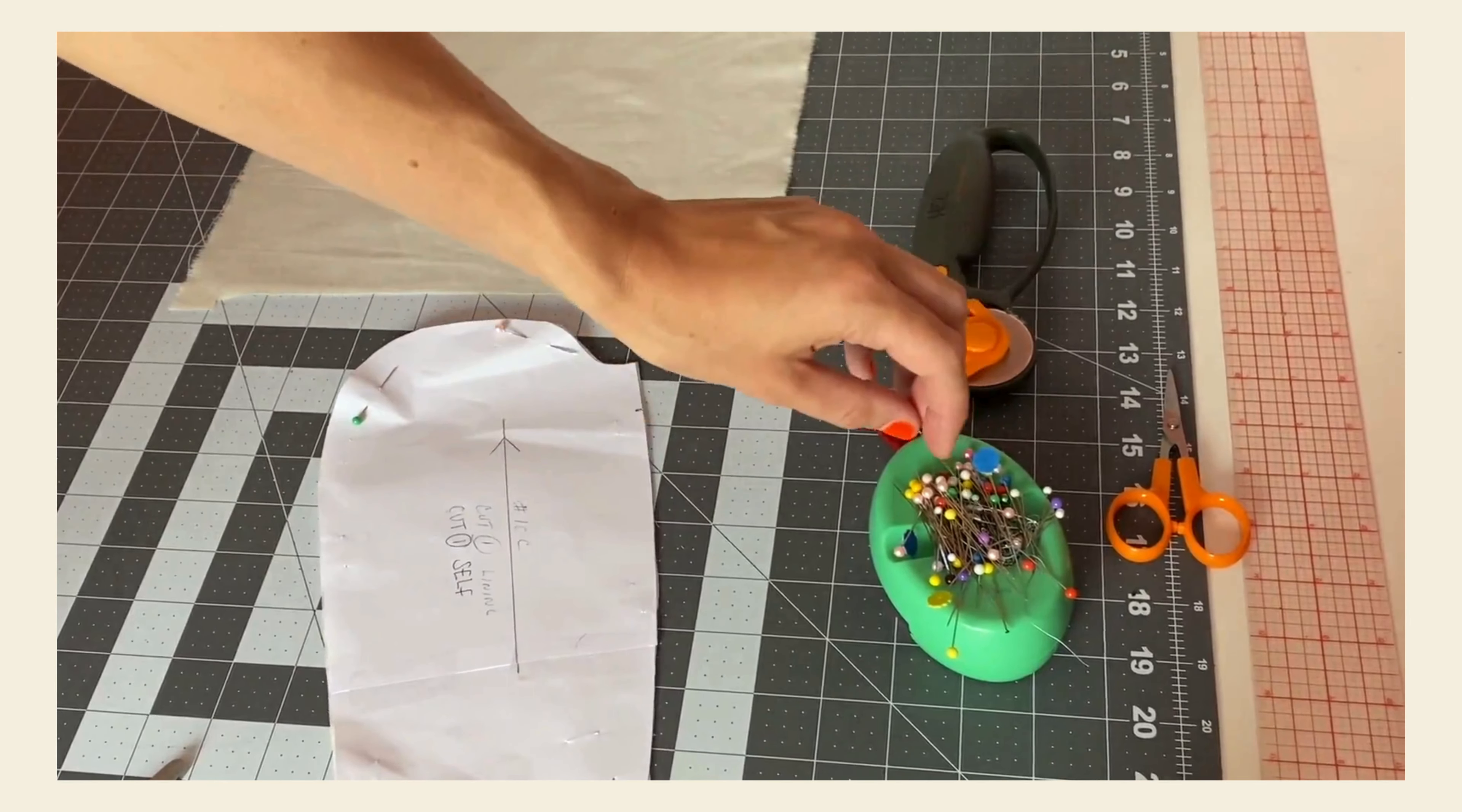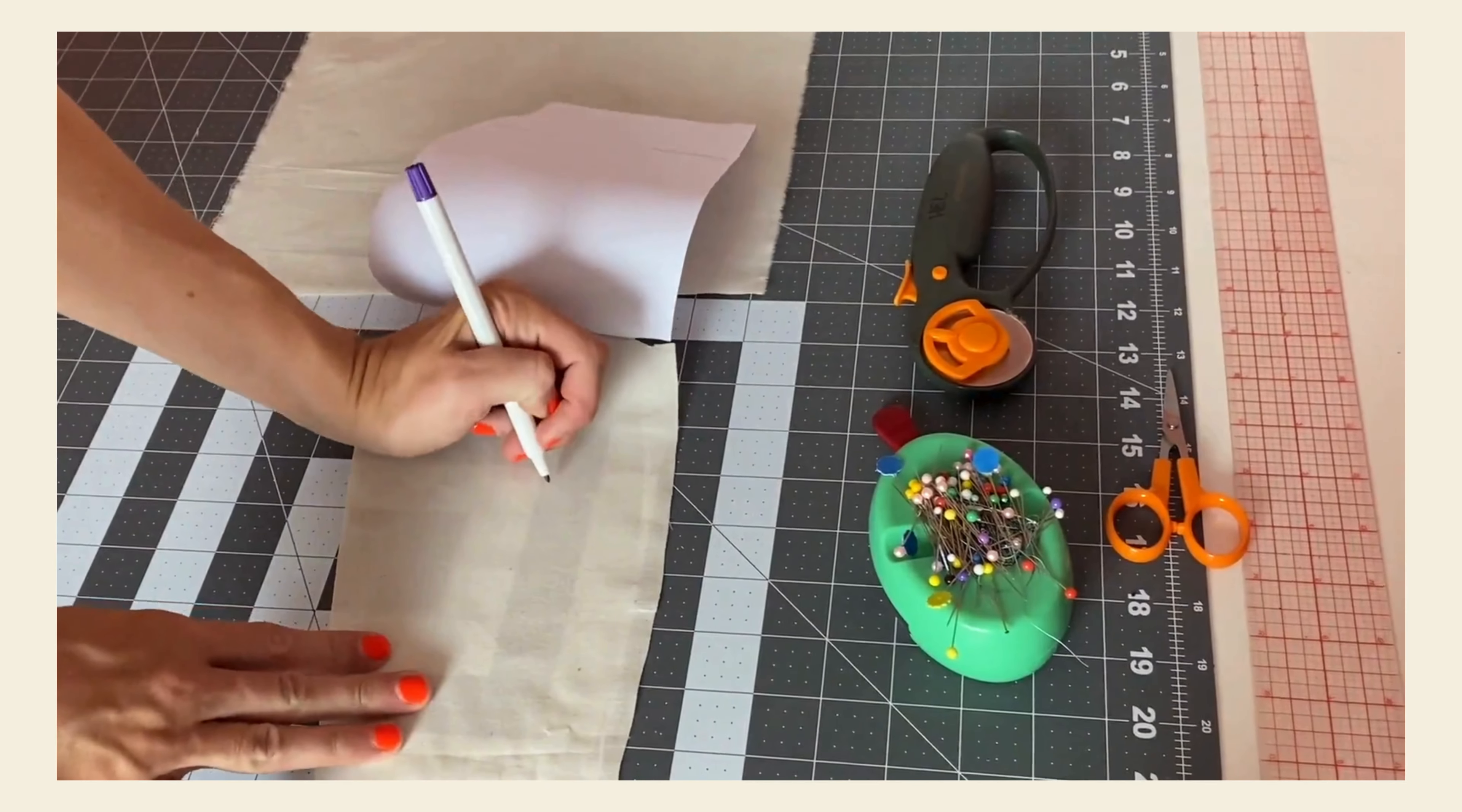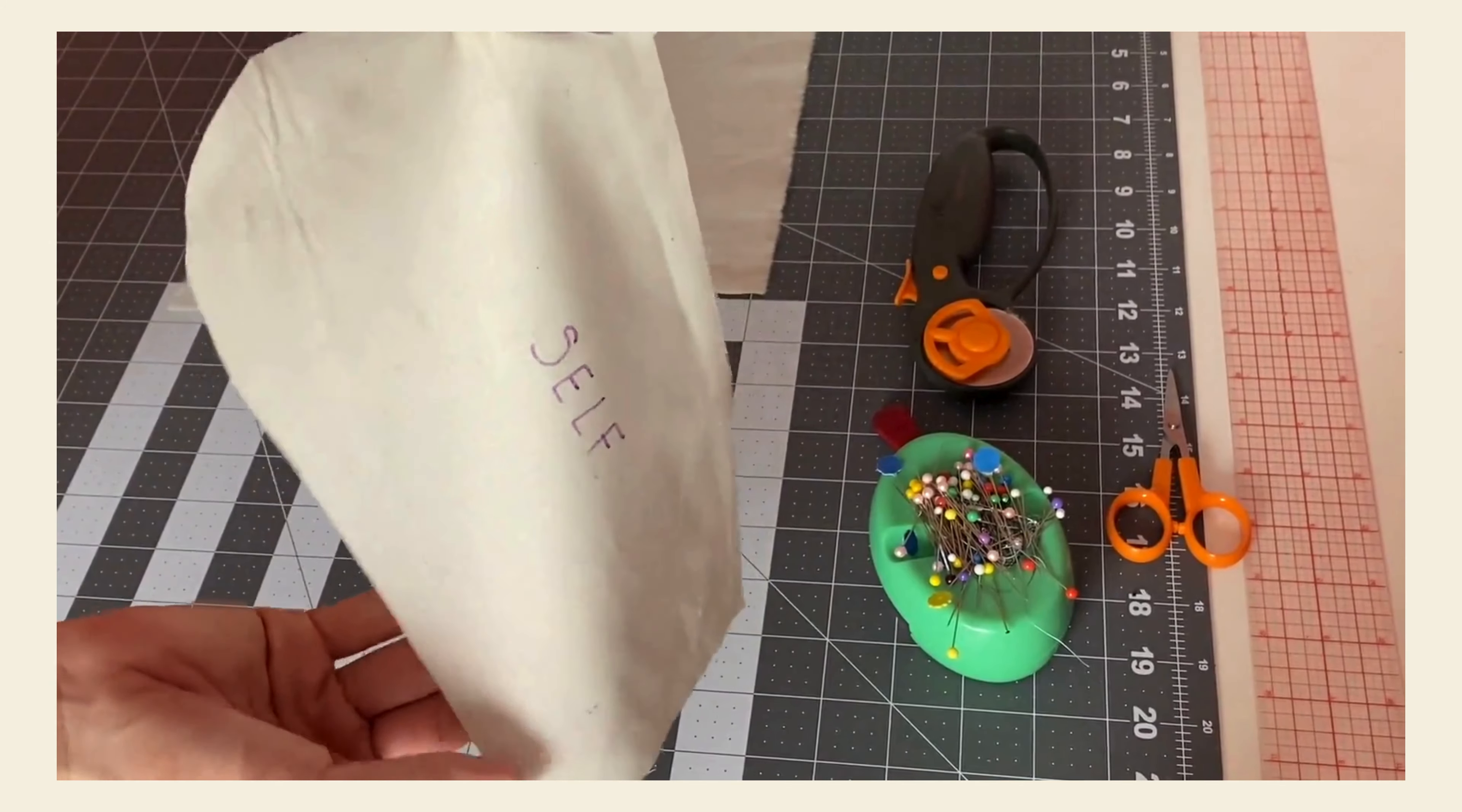Okay, so that's one pattern piece all cut out and marked. I'm going to go ahead and take most of my pins out. I do like to leave one pin in with my patterns pinned to the fabric and I also like to write on them the name of the pattern piece or the type of fabric that I have because I don't always trust my memory.